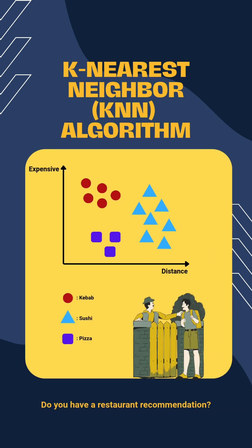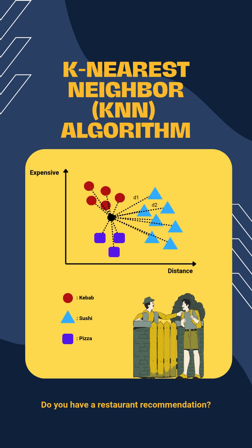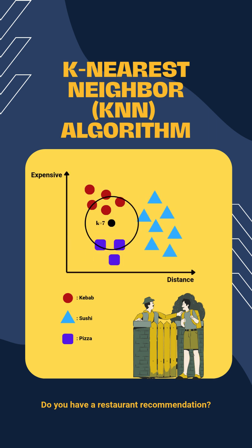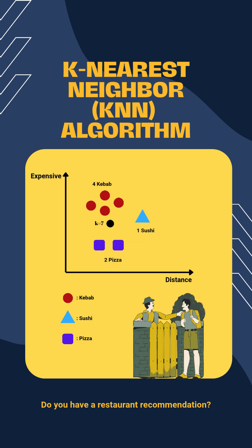Let's say you're new in town and looking for a good restaurant. You ask your nearest seven neighbors. If four say kebab, two say pizza, and one says sushi, you go with kebab. That's how KNN decides.